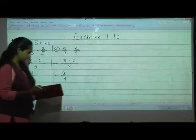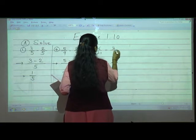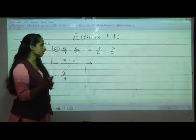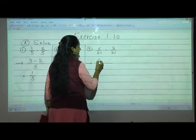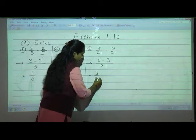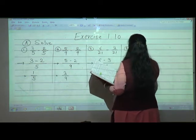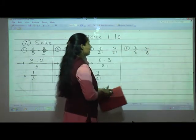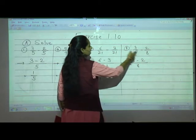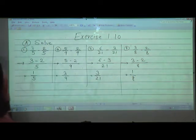Fifth one: 6 upon 21 minus 3 upon 21. Even if denominators are two-digit numbers, if they are same just subtract the numerators. 6 minus 3 is 3 upon 21. Eighth one: 3 upon 8 minus 2 upon 8. Denominators stay as they are, subtract numerators: 3 minus 2 is 1 upon 8.